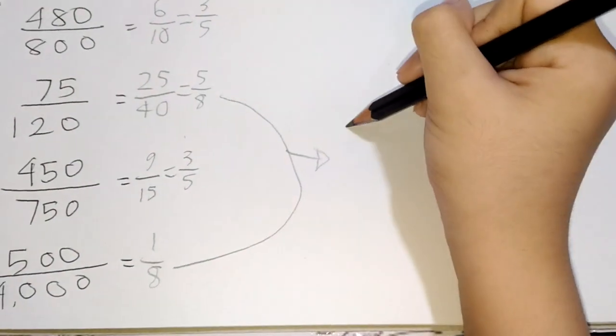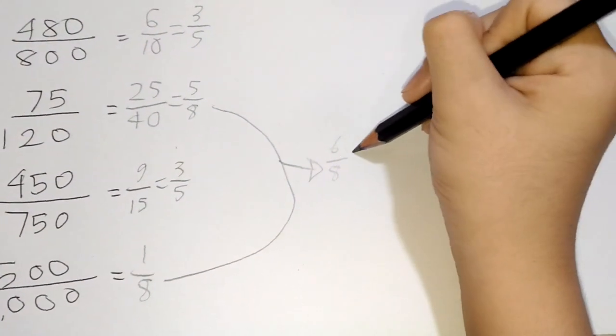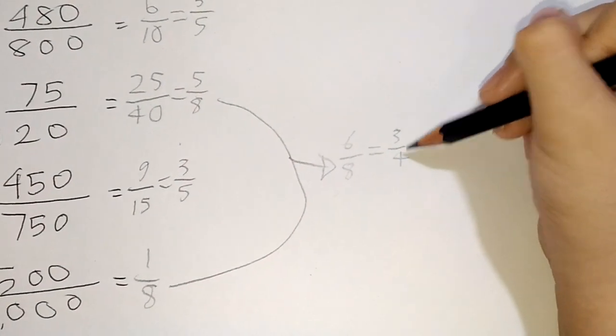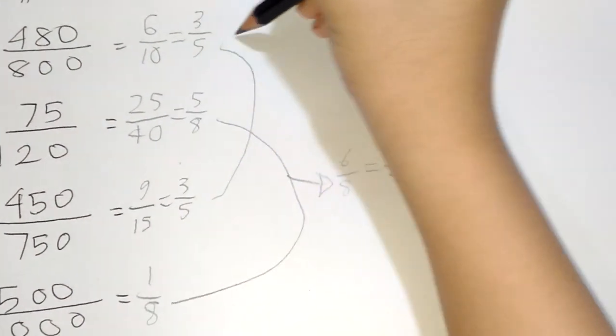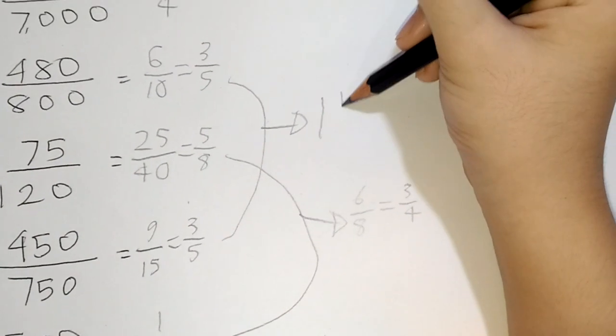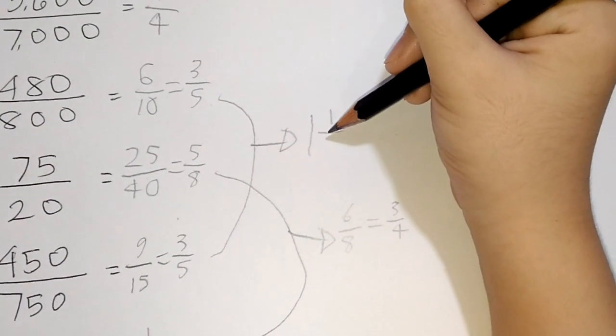Okay. This equals to 6 over 8, which equals to 3 over 4, which equals to 0.75. So, you're doing a different fraction already? Yes, I know this is 1 and 1 fifth.